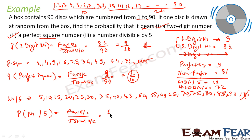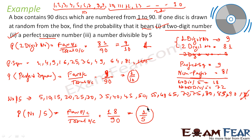There are 18 numbers divisible by 5 between 1 and 90. Total outcome is 90. So probability of a number divisible by 5 = 18/90 = 1/5. The probability is 1/5.